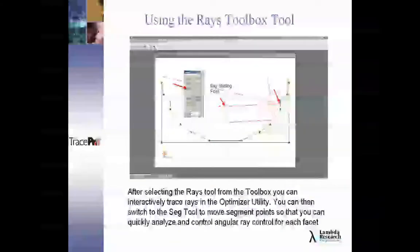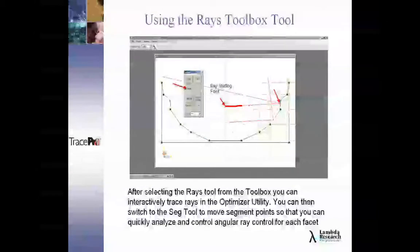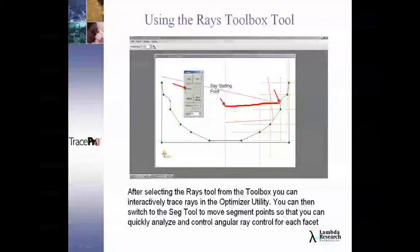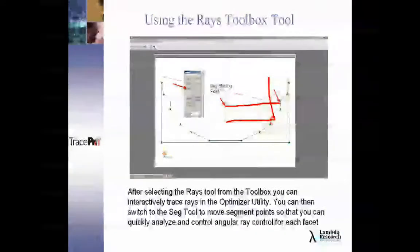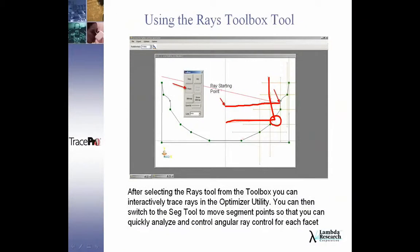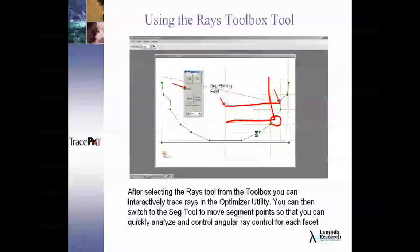So I'm going to click on the Rays button, and then left-mouse-click and drag the line over to that segment, and then I can see what actually happens when that segment will hit the ray. I can specify any segment as being reflective or transmissive, depending on if it's a lens or a mirror.